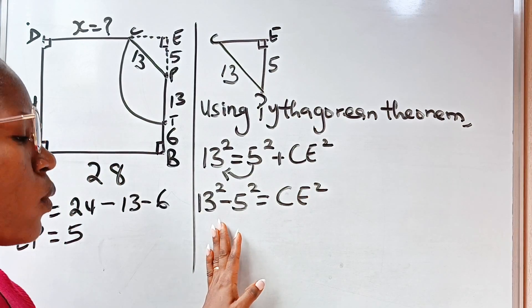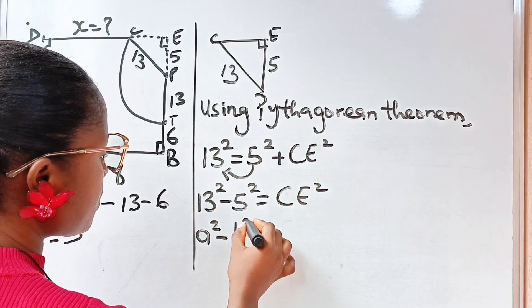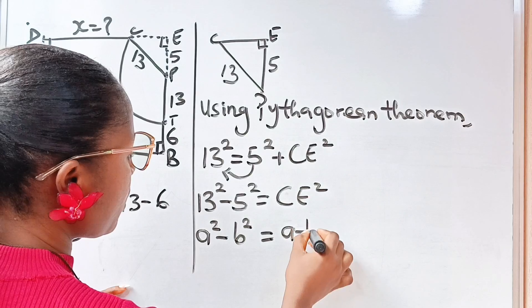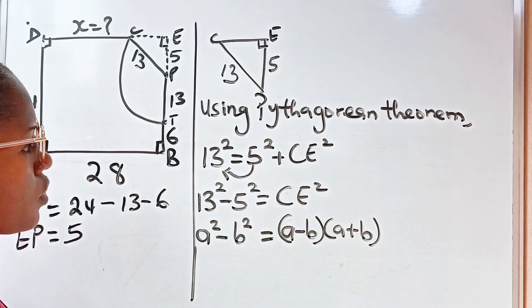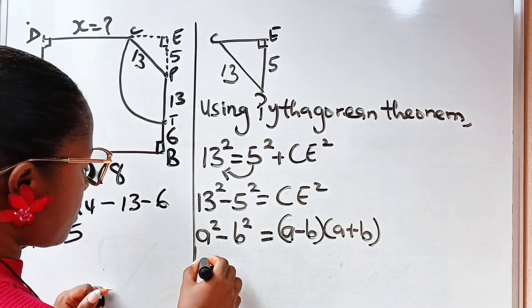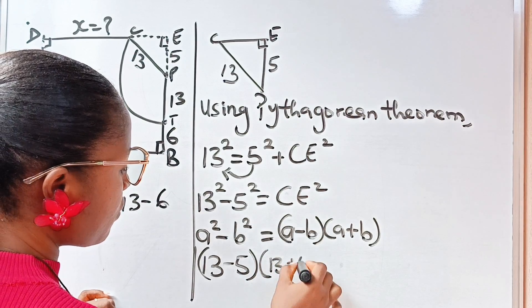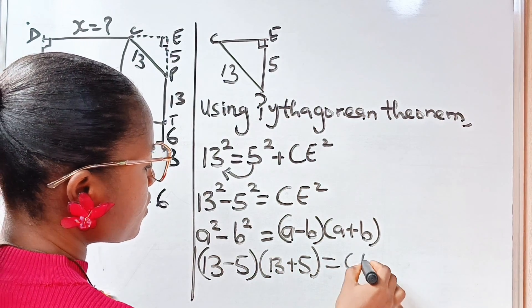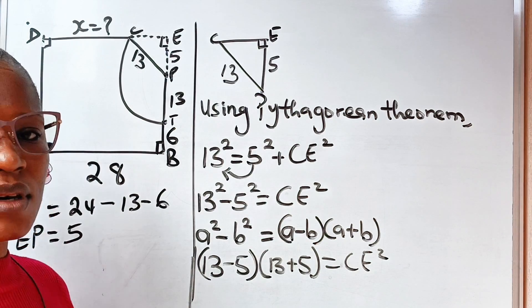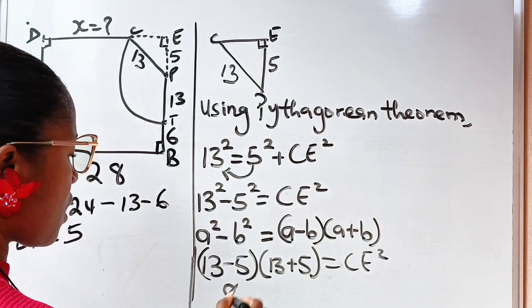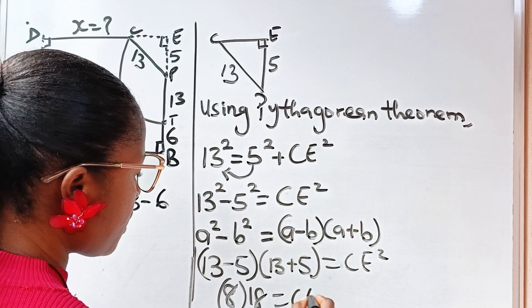Now when you have a squared minus b squared, it's equal to (a minus b) multiplied by (a plus b). So we can solve this as (13 minus 5) multiplied by (13 plus 5) equals CE squared. 13 minus 5 is 8, and 13 plus 5 is 18, equals CE squared.